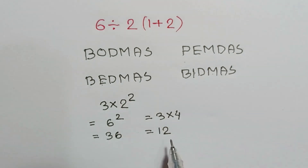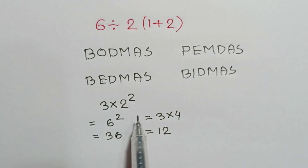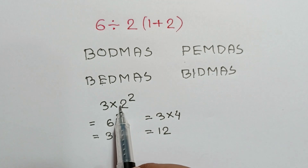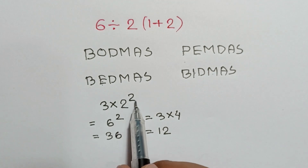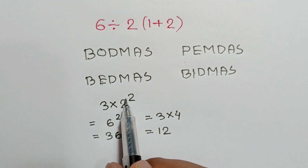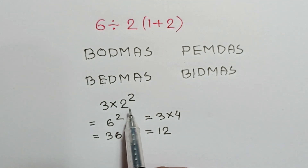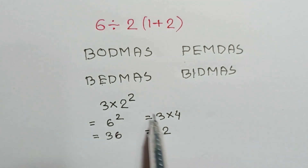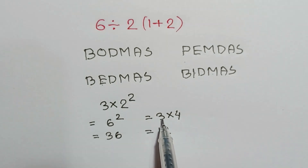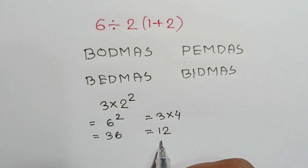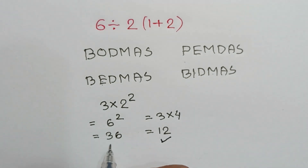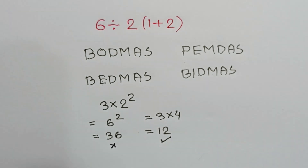So we will calculate the exponent part first. 2 squared is equal to 4, times 3 is equal to 12. That is the right answer; 36 is not right.